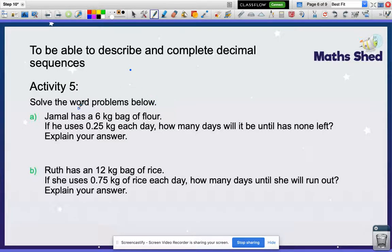So here we've got some word problems we need to think about. Jamal has a 6 kilogram bag of flour. If he uses 0.25 kg each day, how many days will it be until he has none left? So this time we're going to be working backwards because we're going to start at 6, and every day we have to take away 0.25. If I was going to create a number line, I would count back 6, and I'm taking away 0.25.